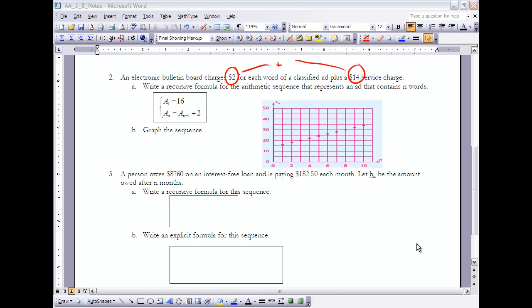Okay, so let's take a look at number 3 now. It says a person owes $8,760 on an interest-free loan, and is paying $182.50 each month. Let b sub n be the amount owed after n months. Write a recursive formula for this sequence.